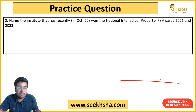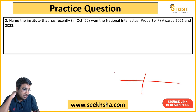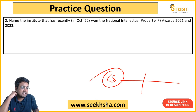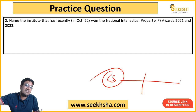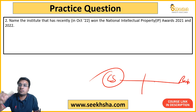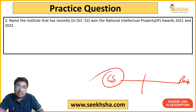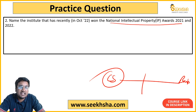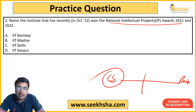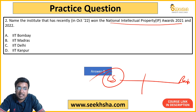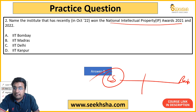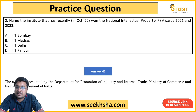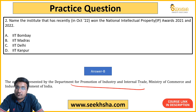For those watching for the first time, our pattern follows a middle path between civil services level intensity and purely factual bank exam style — we cover both types of questions. Second question: Name the institute that recently won the National Intellectual Property Award for 2021 and 2022. The options are IIT Bombay, IIT Madras, IIT Delhi, or IIT Kanpur. The correct answer is option B — IIT Madras. This award is given by the Department for Promotion of Industry and Internal Trade under the Ministry of Commerce.